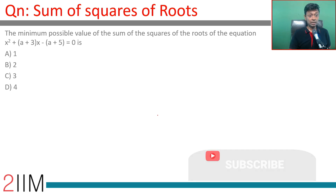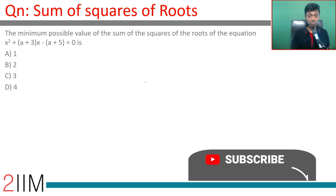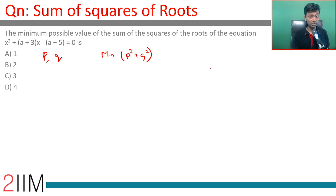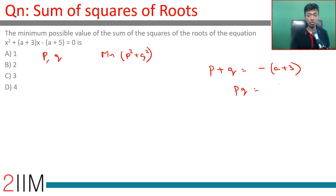Sum of squares of roots. The minimum possible value of the sum of the squares of the roots of the equation — the roots p and q, the two roots of a quadratic. We want to find the minimum value of p squared plus q squared. We know the sum of roots and product of roots formulas: sum of roots p plus q equals minus b over a, which is minus of (a plus 3); and pq equals c over a, which is minus of (a plus 5).